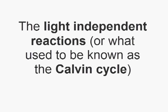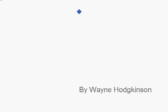We're now going to look at the light independent reactions, which used to be known as the Calvin cycle. What we have here is a large, unstable molecule.